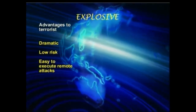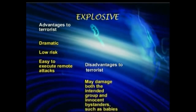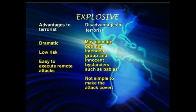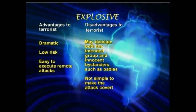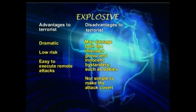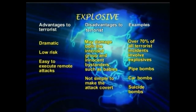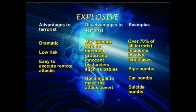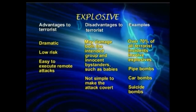By far, the most common weapon of mass destruction is an explosive — a bomb. Over 70% of terrorist incidents involve bombs. They are dramatic, pose little risk to the bomber, and are easy to explode from a distance. The main disadvantages to the terrorists are that they need to gather a lot of intelligence about the site they want to attack, they run many risks of being detected before they can execute the attack, and they may or will kill or hurt innocent bystanders.